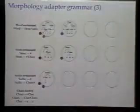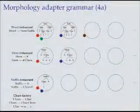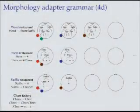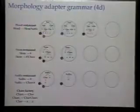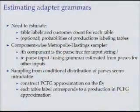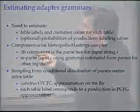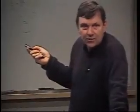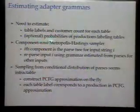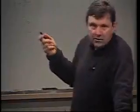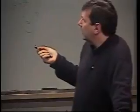Let me say a little about how one actually does estimation in this case. You have a set of strings you want to generate. You need to estimate both the table labels and the customer count for each table, and then you can also estimate the production probabilities from those trees. We've developed a sampling algorithm which does this. One tricky thing is that there doesn't seem to be a straightforward sampling algorithm for producing these conditional samples, so in fact what we do is construct a PCFG approximation and then use a Metropolis-Hastings correction factor.